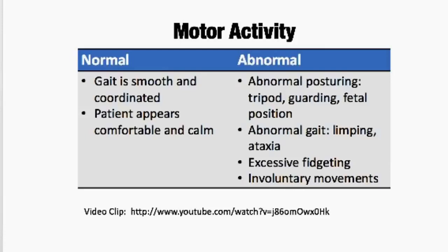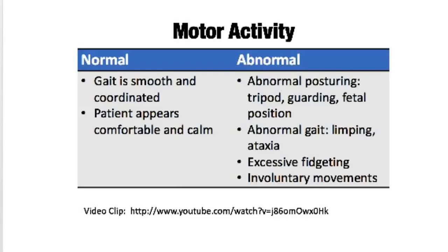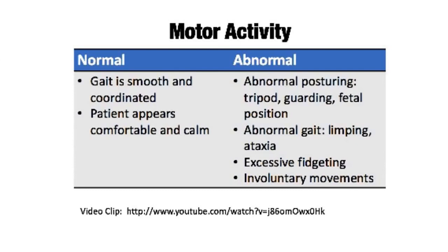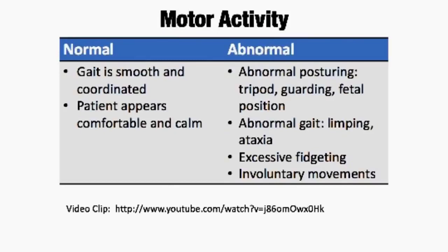You can also look at the patient's motor activity. Usually their gait should be smooth and coordinated. They should appear comfortable and calm. You might notice abnormal posturing like tripod position if they're having respiratory distress, or fetal position or guarding — maybe they're guarding their right arm because their shoulder is dislocated. Other things to note include pain, limping, ataxia, excessive fidgeting, and involuntary movements.